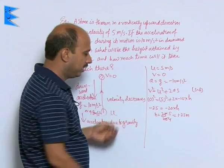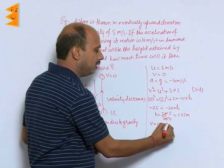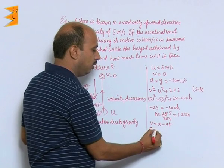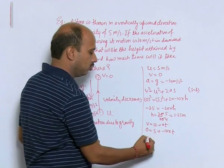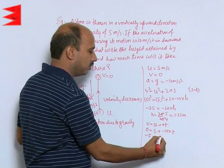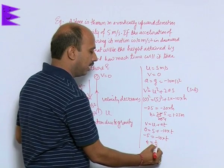Now we have to calculate time also, very simple. We can use v is equal to u plus at. That is 0 is equal to 5 plus minus 10 into t. So we can write minus 5 is equal to minus 10 into t. So t is equal to 1 by 2 seconds.